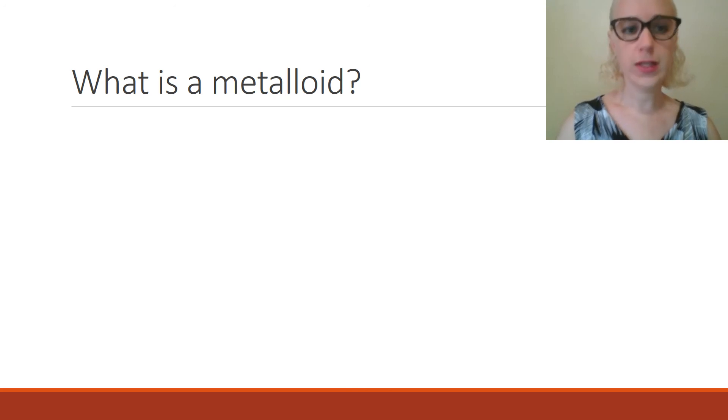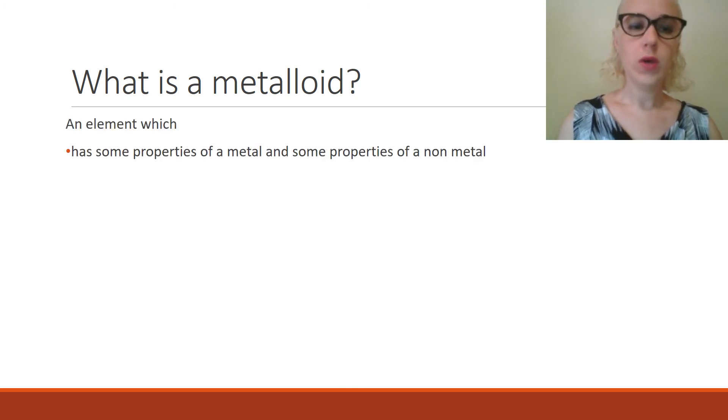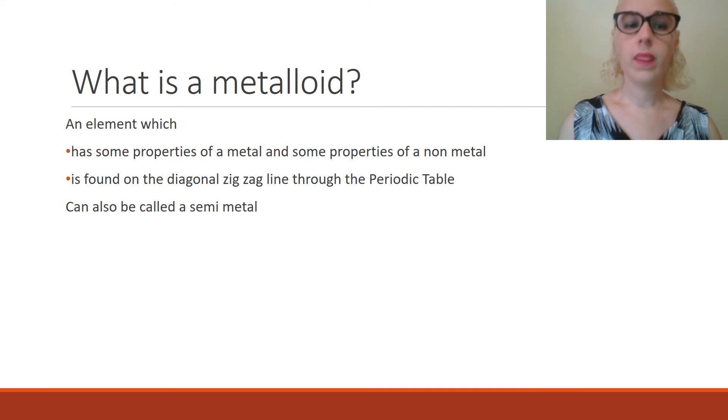So now let's consider what is a metalloid. A metalloid is an element which has some properties of metal and some properties of non-metals. It's found on the diagonal zigzag line through the periodic table. And metalloids can also be called semi-metals for obvious reasons.